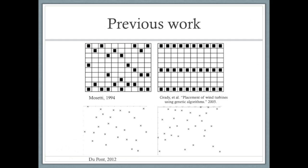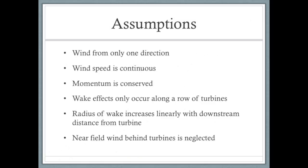The results from previous researchers vary in solutions. Slight changes in the parameters based on their assumptions have led to a wide variety of solutions. Some of my notable assumptions are that the wind is only coming from one direction, the wind speed is continuous, momentum is conserved, and that the wake effects only influence the wind speed down one row of turbines, so laterally neighboring turbines don't feel the downstream effect.